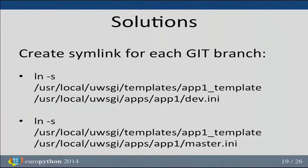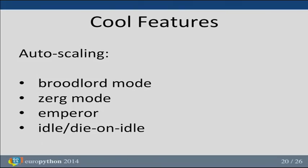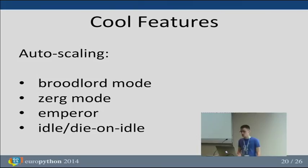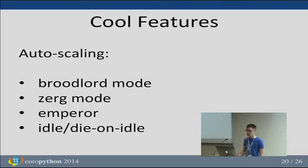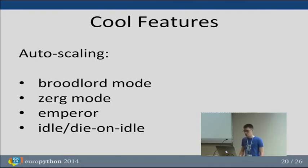Let's talk briefly about some of UWSGI's other interesting features. You can implement auto-scaling using the Broodlord, Zerg, and Emperor modes combined with idle options. The idea is that when site load is heavy and your vassals can't handle it, they ask the Emperor to enter Broodlord mode and provide Zerg workers to help serve all the requests. After the load normalizes, the Broodlord kills all the Zergs and everything returns to normal.